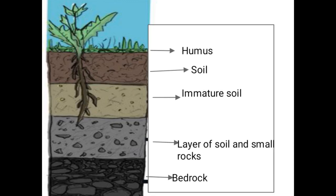The topmost layer is formed as humus. How is this topmost layer formed? It is formed from the decomposition of plant and animal remains, which mix into the soil and decompose. The top layer forms as humus. It is usually found in dense forest areas.